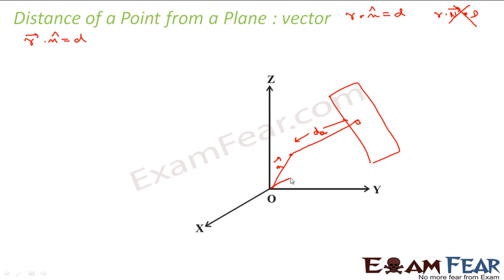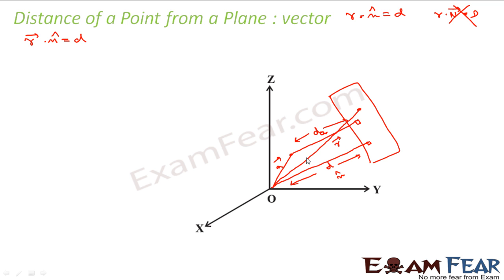From here I draw one more perpendicular to the plane. This is d distance, because the equation of the plane is r dot n = d. That means I take any point r on this plane, and this is the n vector. So I have to find this distance. I have point A, and let's suppose I have some r vector in this plane.